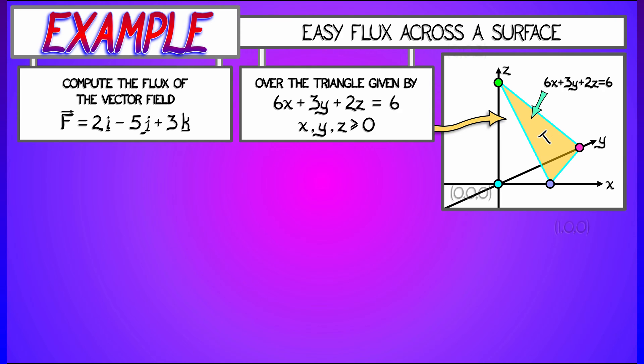You can check that that triangle has vertices at (1, 0, 0), (0, 2, 0), and (0, 0, 3).